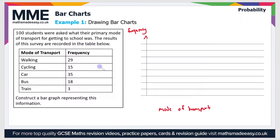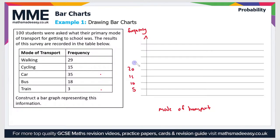We need to choose an appropriate scale first of all. For the frequency axis, the data ranges from a lowest value of 3 to a maximum value of 35, so let's go up in 5s: 5, 10, 15, 20, 25, 30, 35, 40.